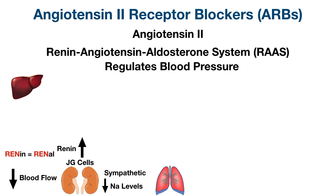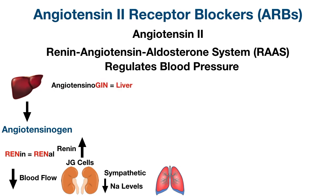Let's figure out what renin does. Renin is an enzyme that plays an important role in converting a protein produced by the liver called angiotensinogen. You can remember this by using the 'gin' in angiotensinogen to think of alcohol, and alcohol is metabolized by the liver. What renin will do is it will cleave angiotensinogen to form angiotensin 1.